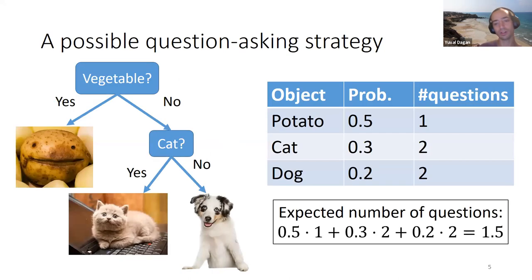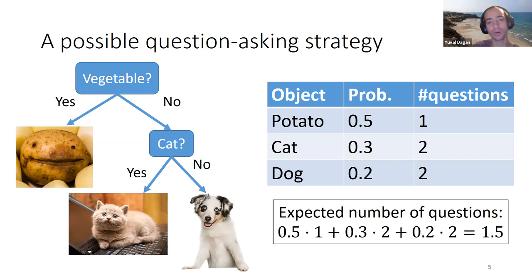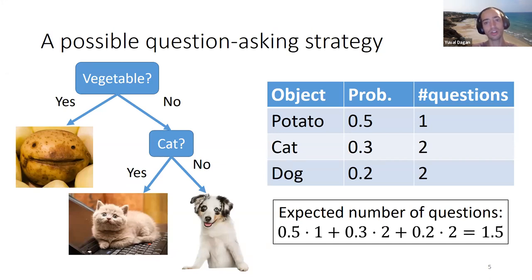Here we have the same example as before but now with a probability distribution over the objects. For example, a potato has probability one half, a cat 0.3, and a dog 0.2. The expected number of questions Alice asks: potato contributes 0.5 times 1, cat contributes 0.3 times 2, and a dog contributes 0.2 times 2, giving 1.5 questions on average.